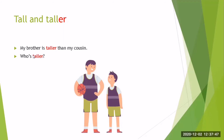Como les expliqué al principio del video, aquí tenemos más adjetivos, más palabras para comparar. Tall and taller — alto, más alto. My brother is taller than my cousin. Who's taller? ¿Quién es más alto? My brother is taller than my cousin.